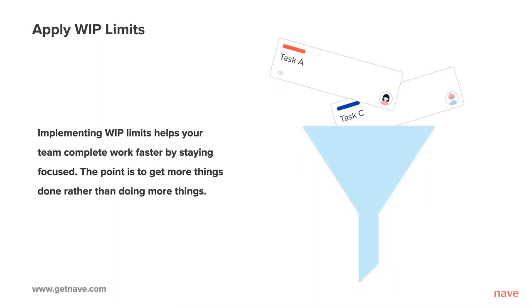Apply work-in-progress limits. Using the Kanban board alone isn't enough to support a smooth and efficient workflow — your processes can still get stuck if there is too much work in progress. Too much WIP leads to delays and your team will be forced to constantly switch context, trying to handle all work at once. Constant context switching is not effective; it's estimated to cause at least a 10% penalty per switch. Multitasking makes your team members feel busier while delivering less, leading to overburden, poor service quality, and a negative effect on team engagement. Implementing WIP limits helps your team complete work faster by staying focused. The point is to get more things done rather than doing more things.